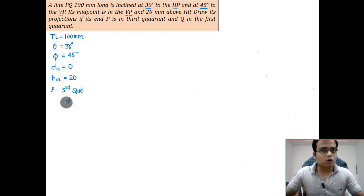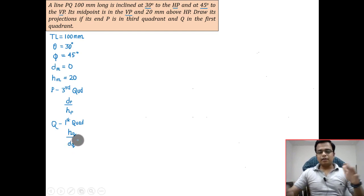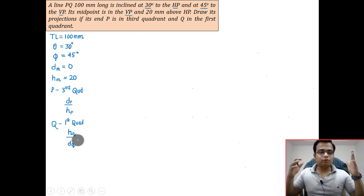What about end Q? Q is in the first quadrant. So for first quadrant, h is above and d below. That is with respect to XY line, h_Q and d_Q. Taking all this into consideration, we need to make the final orthographic projection.